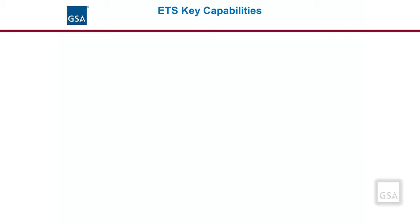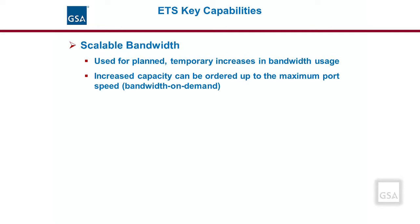Ethernet transport service on the EIS contract provides agencies with the ability to meet their dynamic bandwidth demands without having to purchase or install new ports, which is costly and time-consuming. Scalable bandwidth enables an agency to plan for known periods of increased bandwidth needs. On EIS, there are several scalable bandwidth features that guarantee a committed bandwidth while ensuring the availability for increased capacity up to the maximum speed of the port. The scalable bandwidth capability combined with the bandwidth on demand option provides agencies with additional flexibility to order increased capacity for a period of time during which increased demand is required.